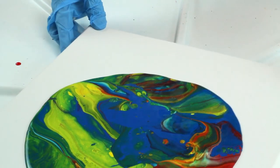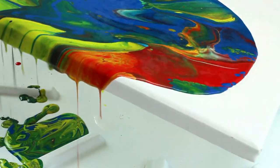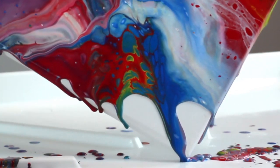Tilt canvas around to spread paint until the entire canvas is covered. You can tap the edge of your canvas onto your drip pan to get that paint to move into the pesky little corner.